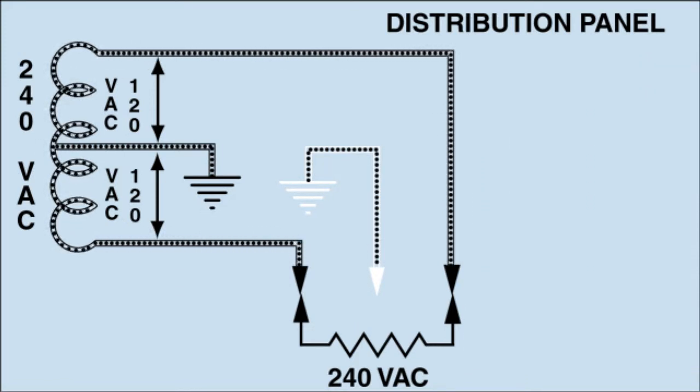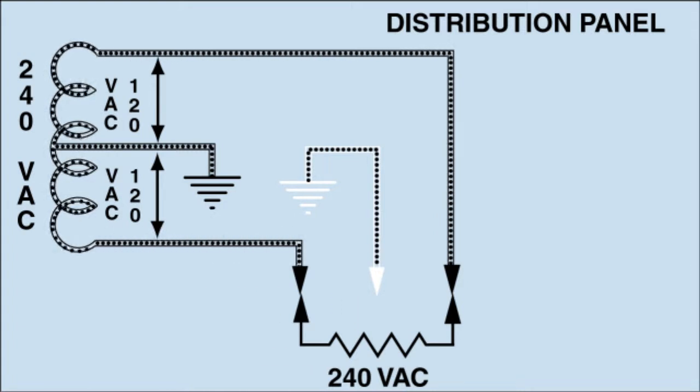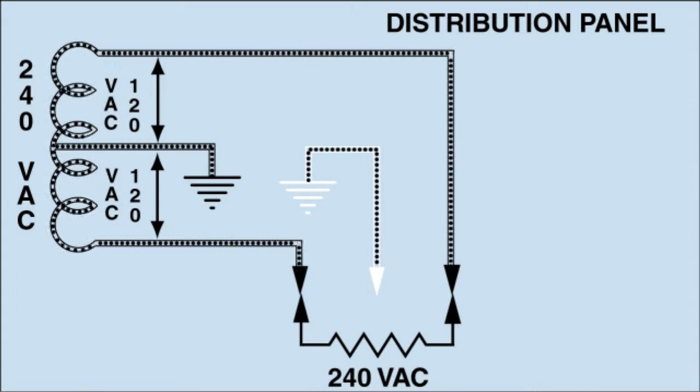You might wonder, then what is that third wire in my power cord? To be precise, it is ground wire and is in the cord for safety.